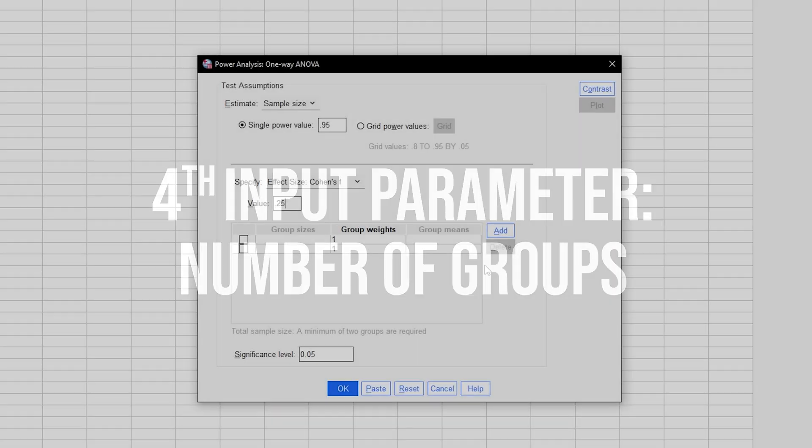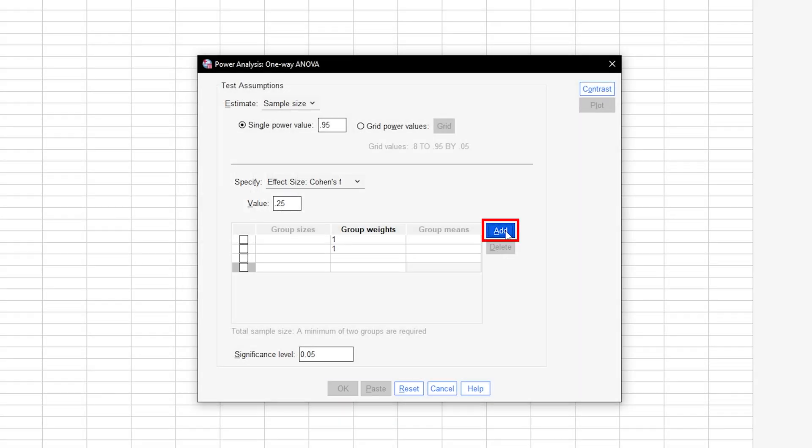Fourthly, you can define the number of groups by repeatedly pressing add. If you have information about the ratios of groups to total sample size, you can weigh the groups accordingly. By the way, group sizes cannot be entered in any a priori sample size calculations and you must use group weights only.